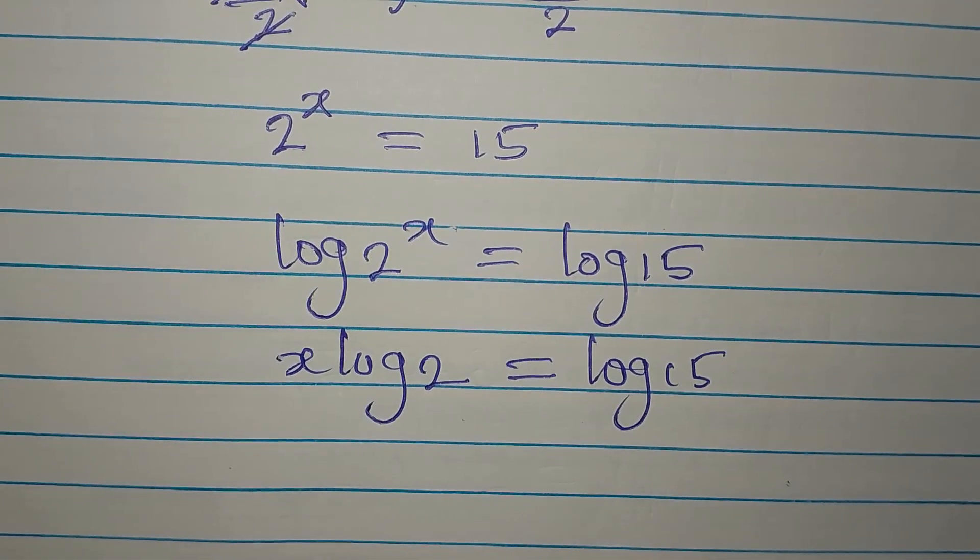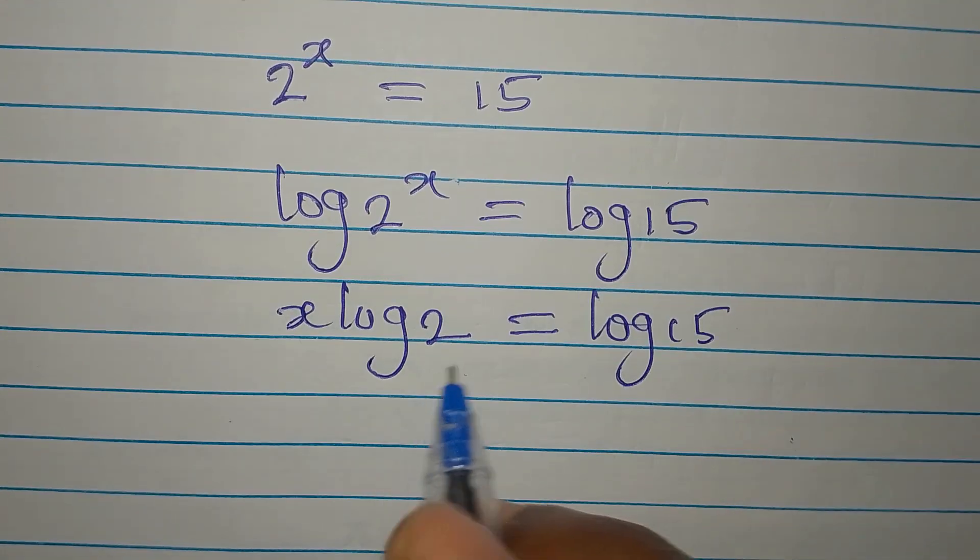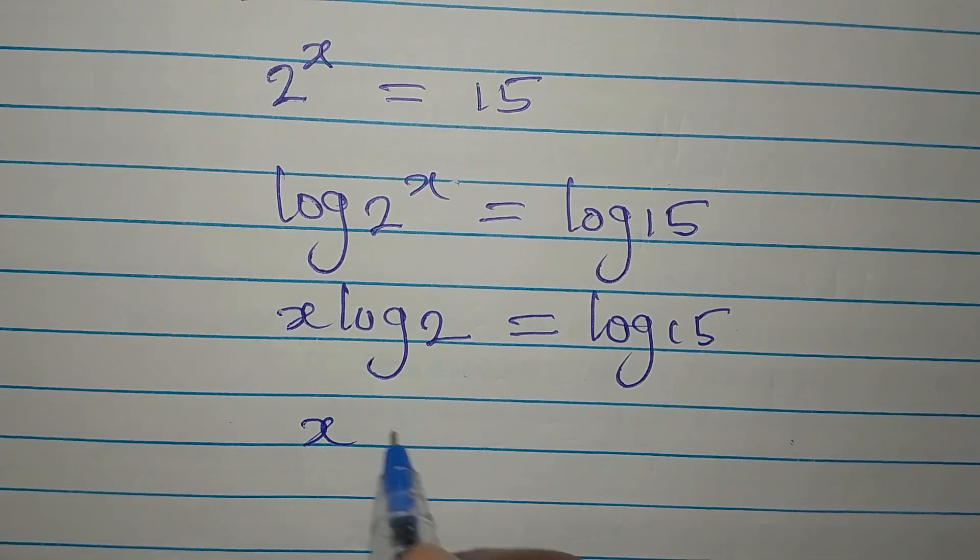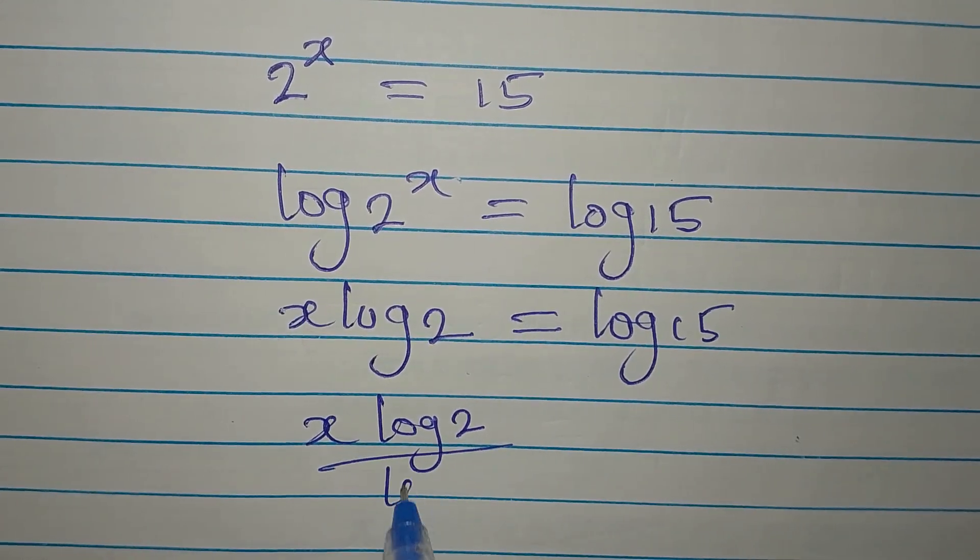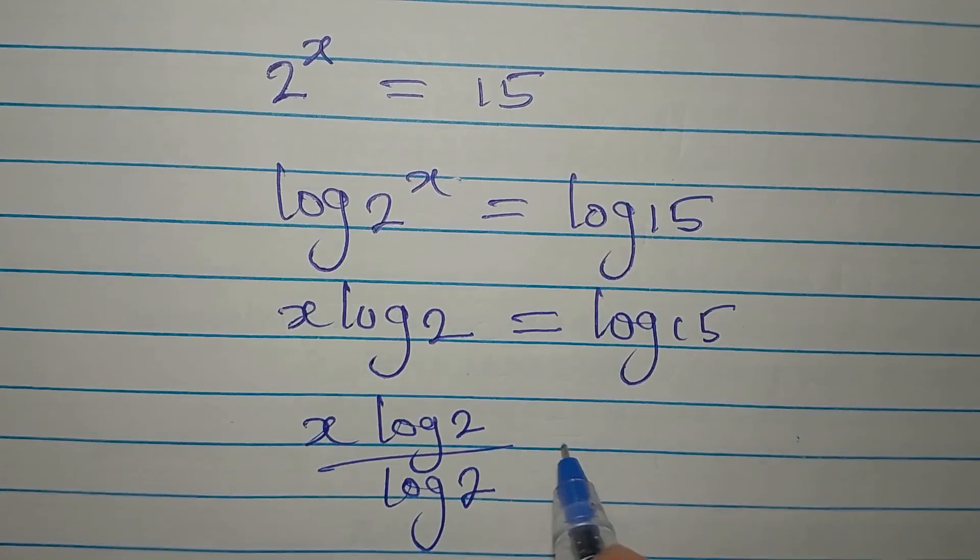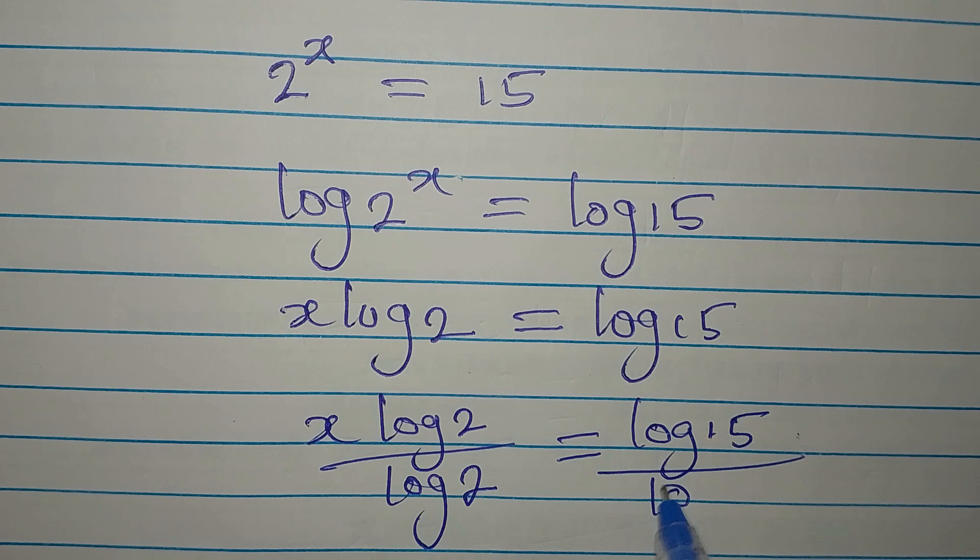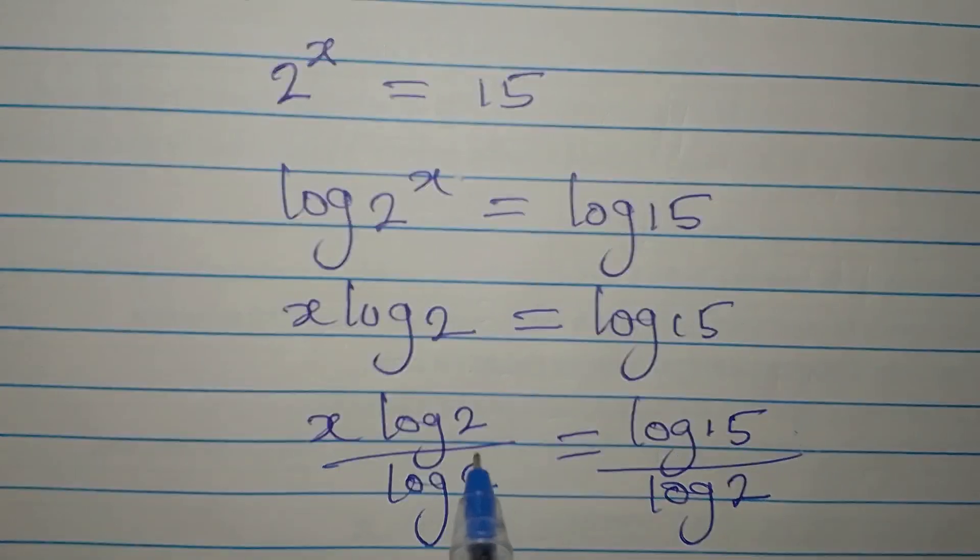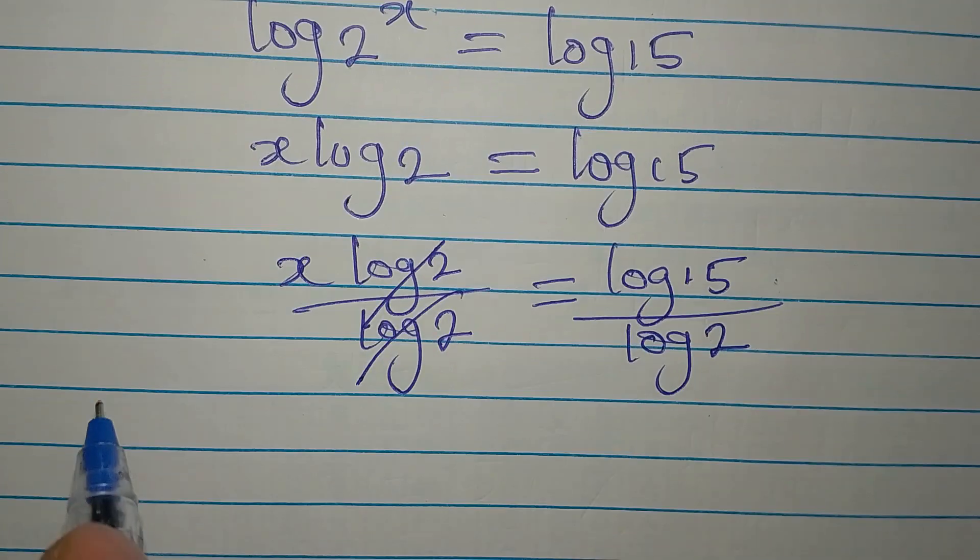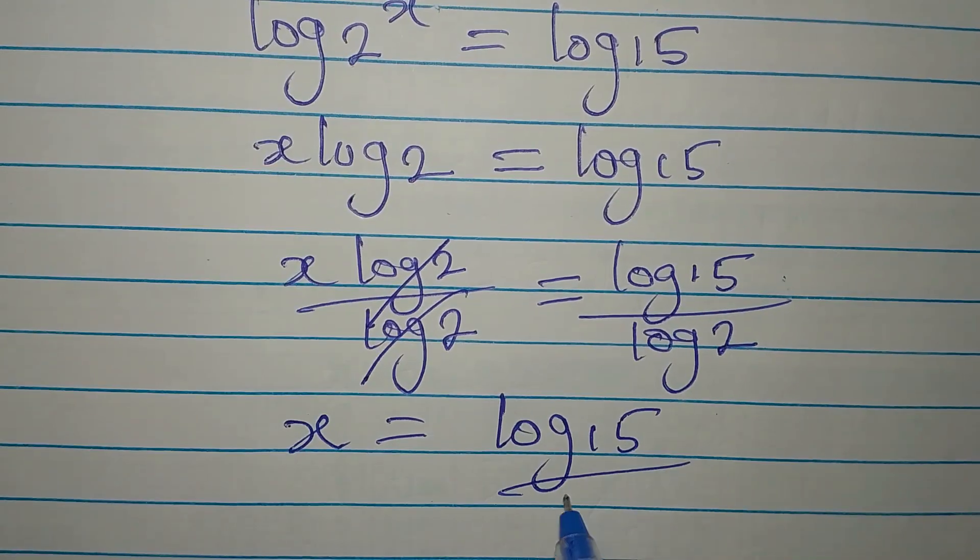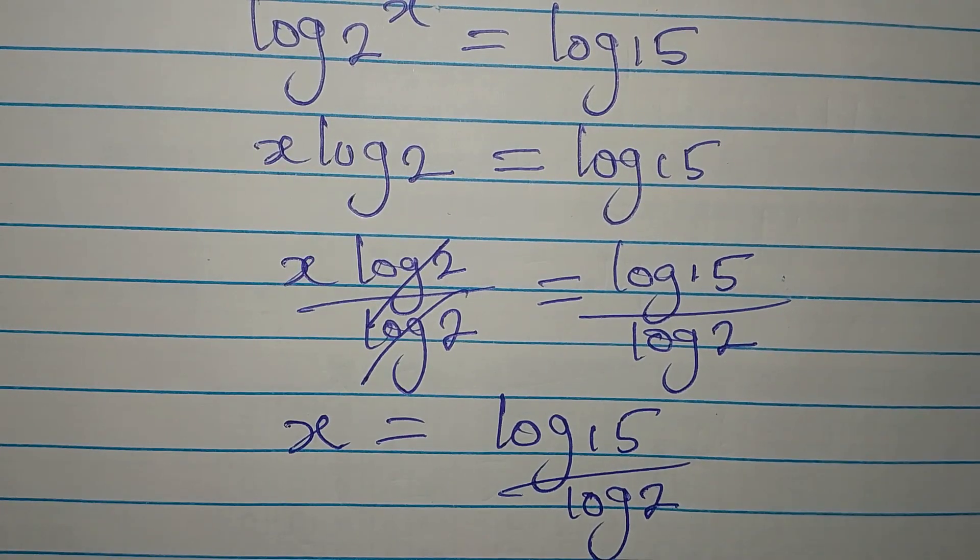And then the next I'm going to do is to divide both sides by log 2, so that x is going to be alone. x log 2 will be divided by log 2. Then log 15 will be divided by log 2. This takes this away, so that x will be log 15 divided by log 2.